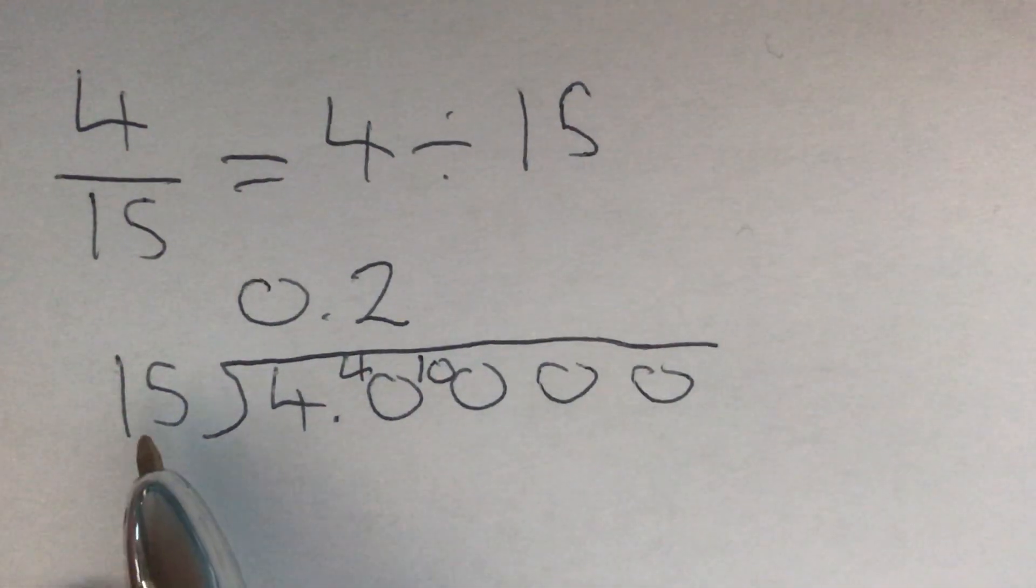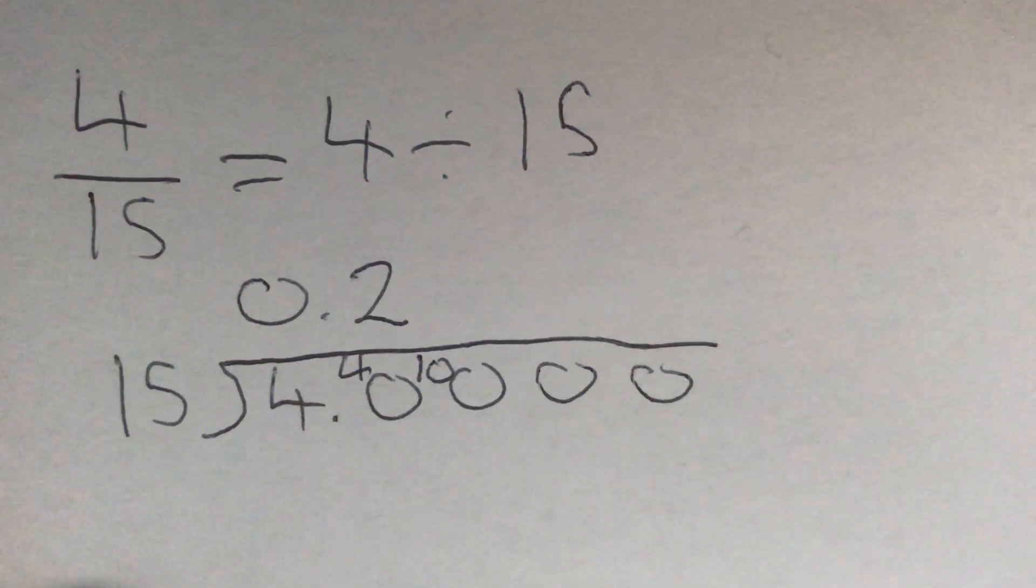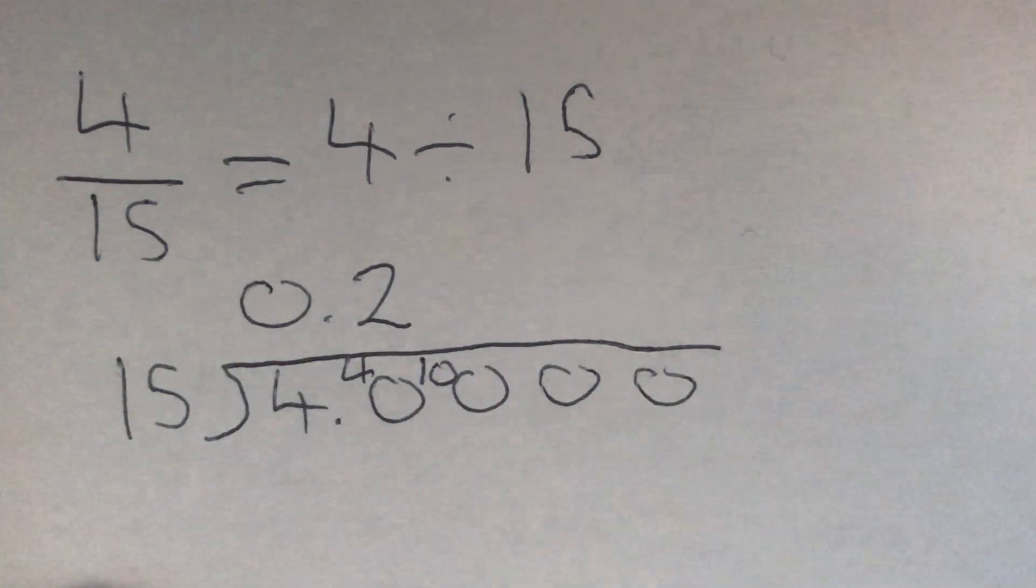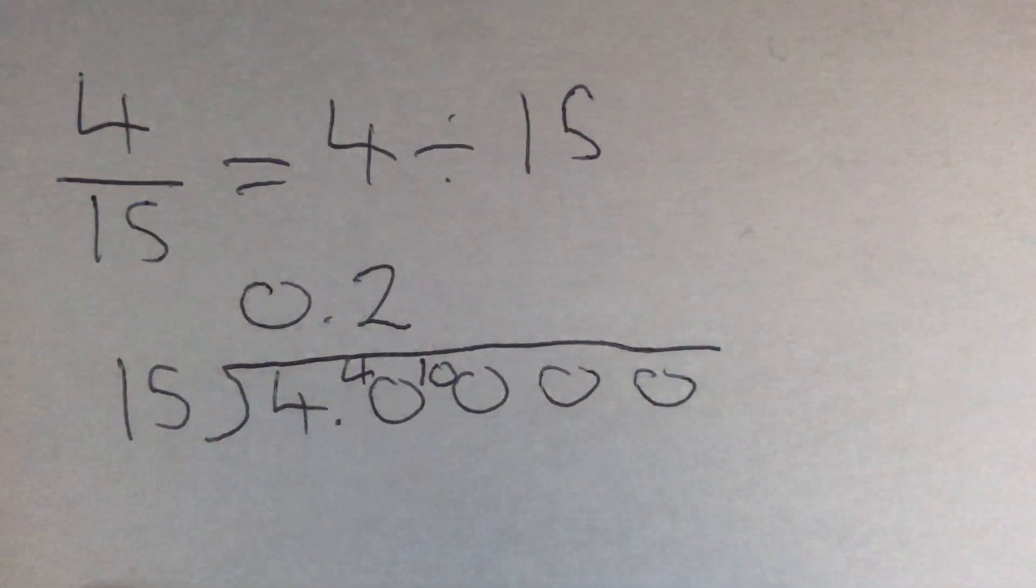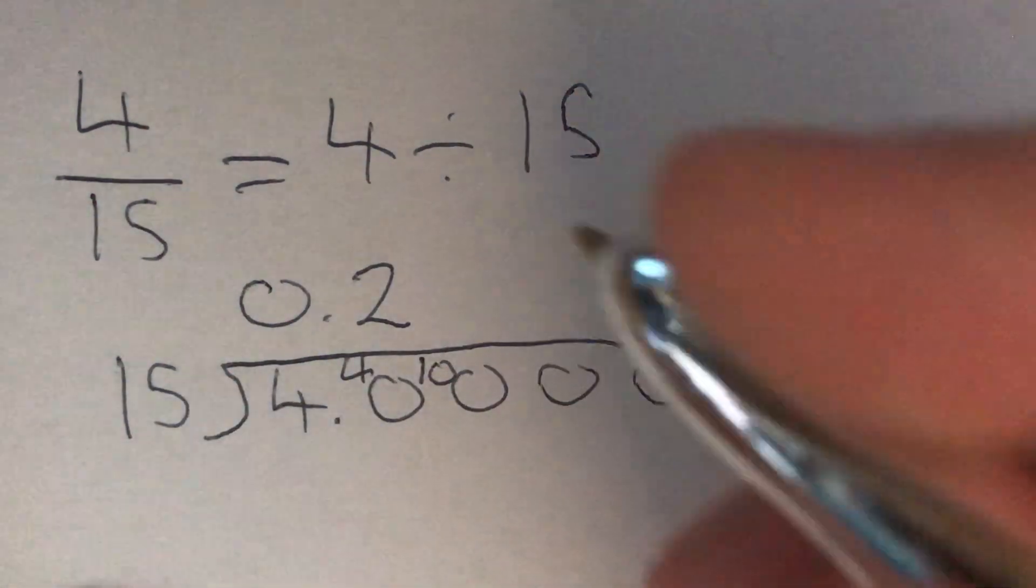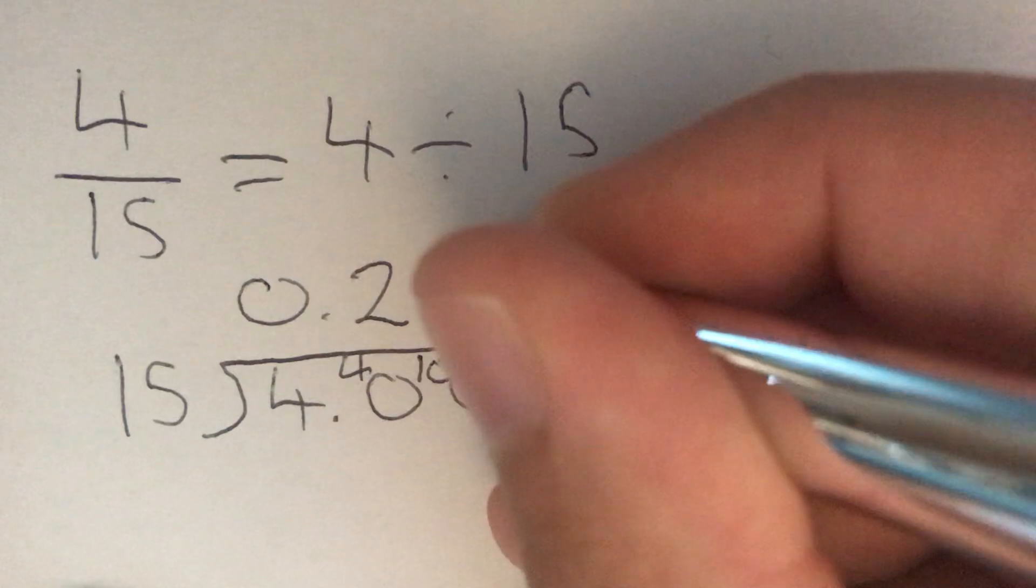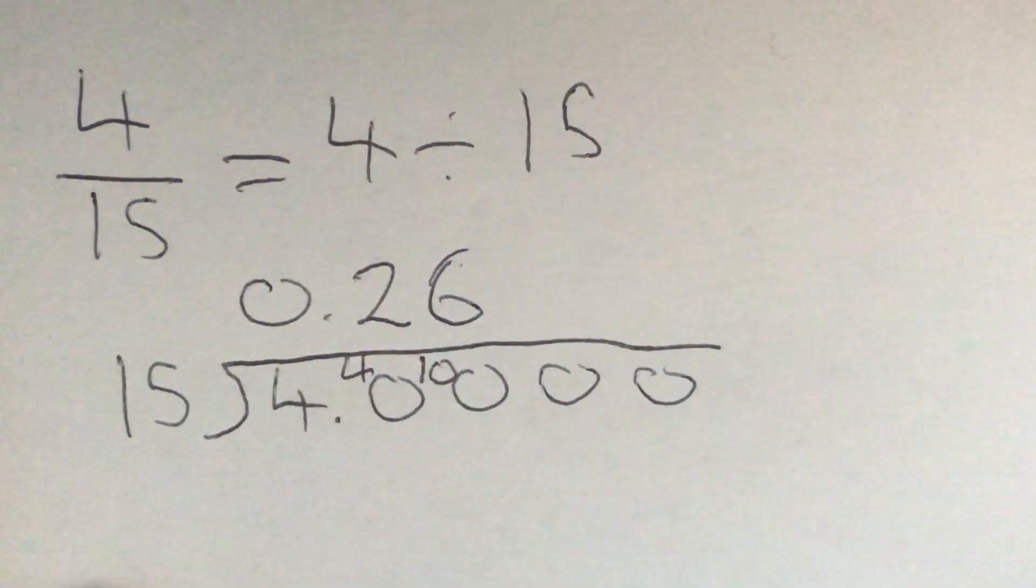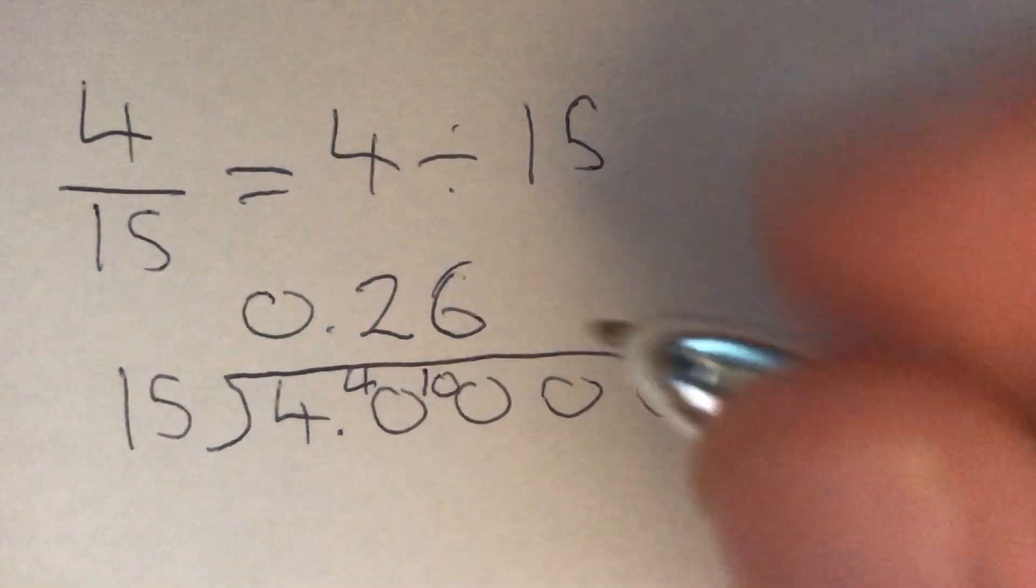Now we're asking how many 15s go into 100. Well, let's count up again: 15, 30, 45, 60, 75, 90, 105. Well, we've gone too high. So the last one before that was 90. How many 15s go into 90? That's 6. And that 15 times 6 gave us 90, so there are 10 left over.